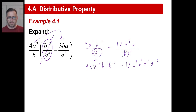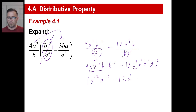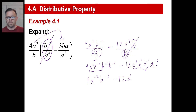Let's take care of this one first. I've got my 4. a to the 2nd times a to the negative 4th is a to the negative 2 (2 minus 4). And b is b to the negative 2 minus 1, so b to the negative 3. Then my 12: a to the 3rd times a to the negative 2 gives me a to the 1. b to the 1 times b to the negative 1 is b to the 0, which by definition is 1. Anything divided by itself is 1, so that term drops out.